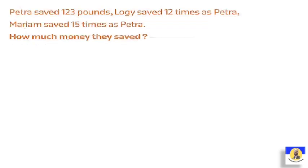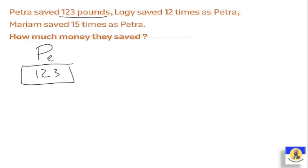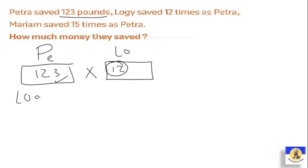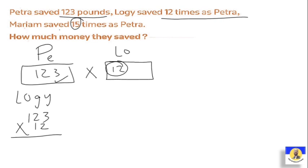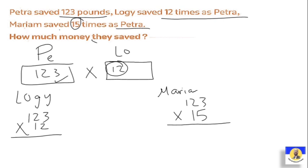Next question: Petra saved 123 pounds. Loji saved 12 times as much as Petra, and Maryam saved 15 times as much as Petra. To find Loji's amount, we do 123 multiplied by 12. To find Maryam's amount, we do 123 multiplied by 15. How much money have they all saved in total?